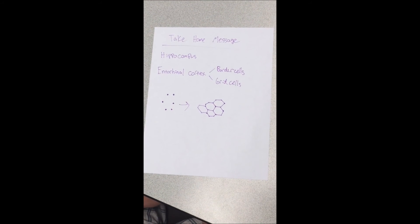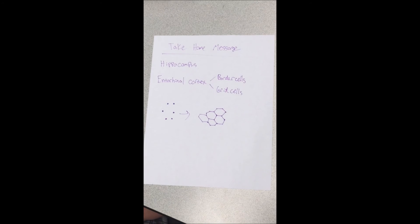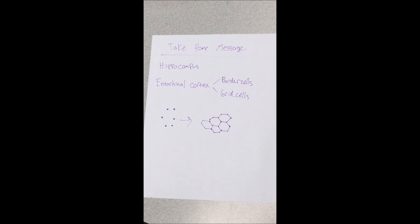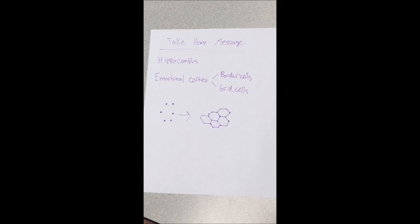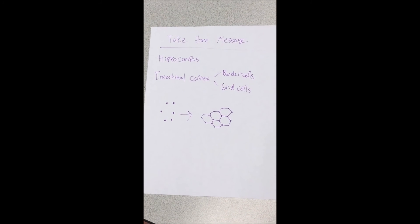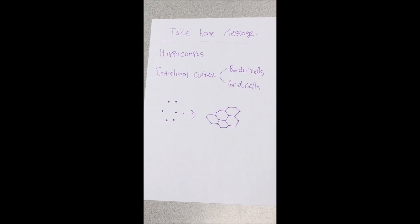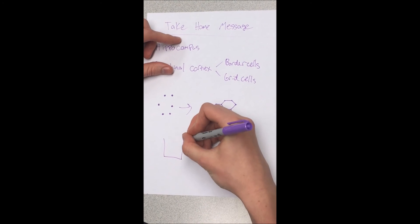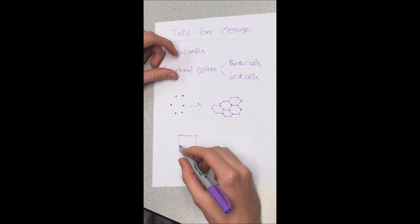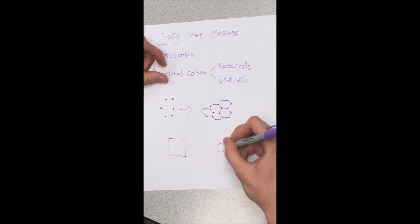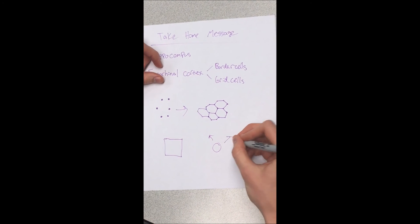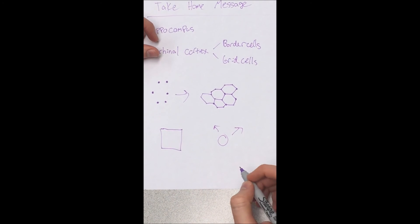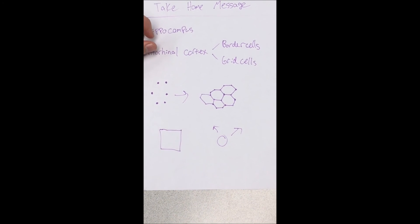Our take-home message is that spatial maps are stored in the hippocampus and entorhinal cortex, which includes border cells and grid cells. The information is stored in hexagonal grids, in which place cells tell you where you are. In addition, border cells tell you where the borders of your environment are, and head direction cells tell you where you're looking to orient yourself within this environment. I hope this video was helpful.